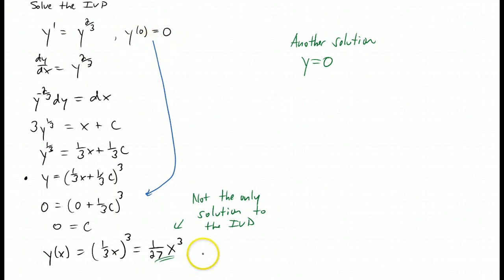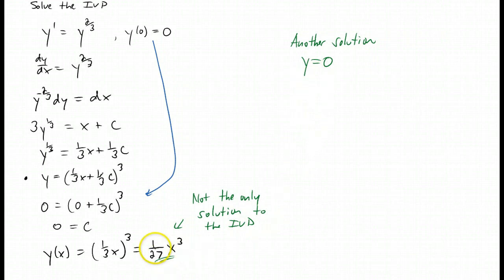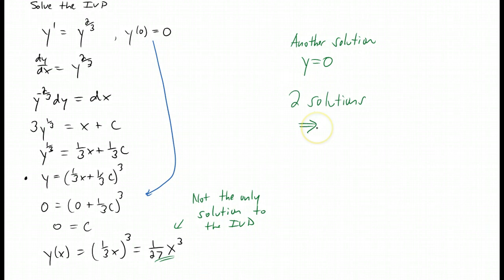Because we have two solutions — y equals zero as one solution, and y equals one twenty-seventh x cubed as another solution — we say that the solution to the initial value problem is not unique.